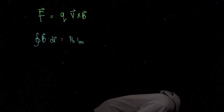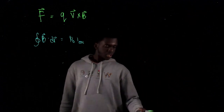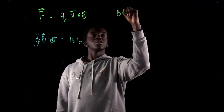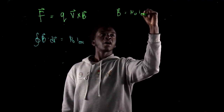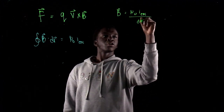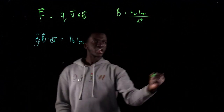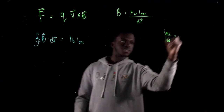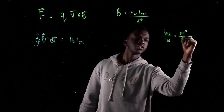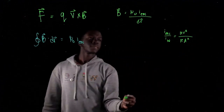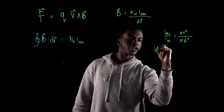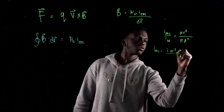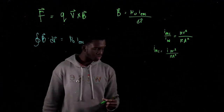Starting with Ampere's law to find B. The enclosed current at radius h is found by ratio: i_enclosed / i_total = πr² / πa², so i_enclosed = i · r² / a². Then B · (2πr) = μ₀ · i · r² / a², giving B = μ₀ i r / (2π a²).